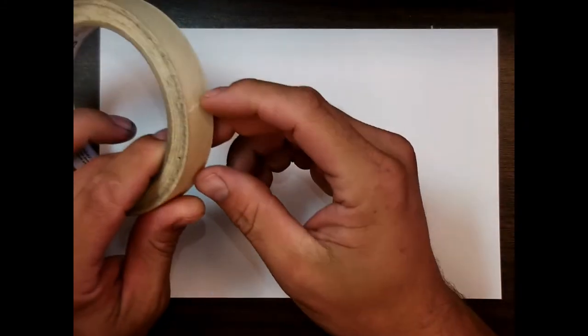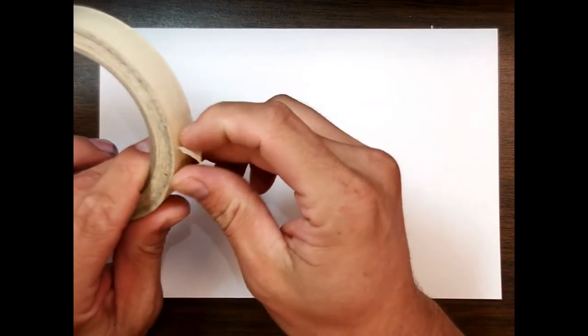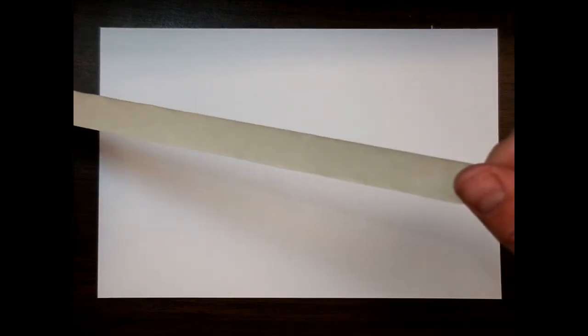So what I want to do now is add tape around the edges. Go ahead and pull off a piece of tape that's the length of your paper, but here's the thing. If I stick this onto the paper right now, when I go to pull it off, it's going to rip.